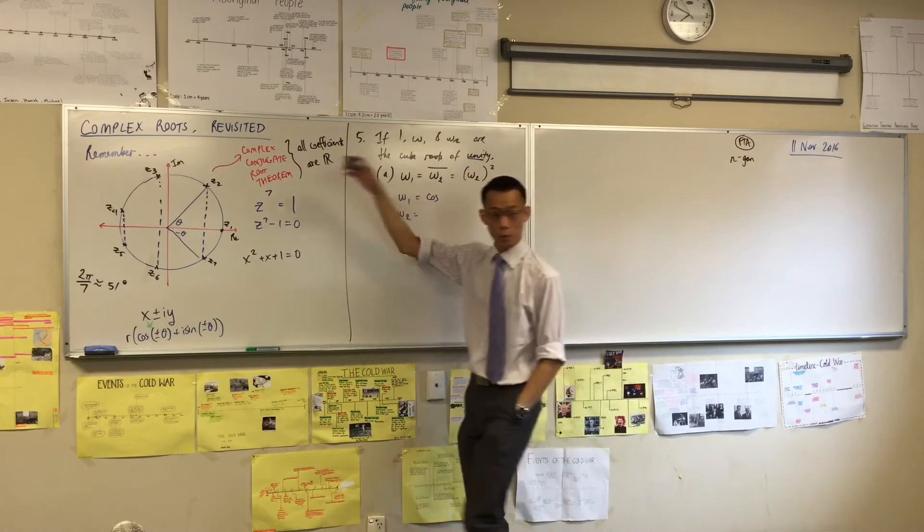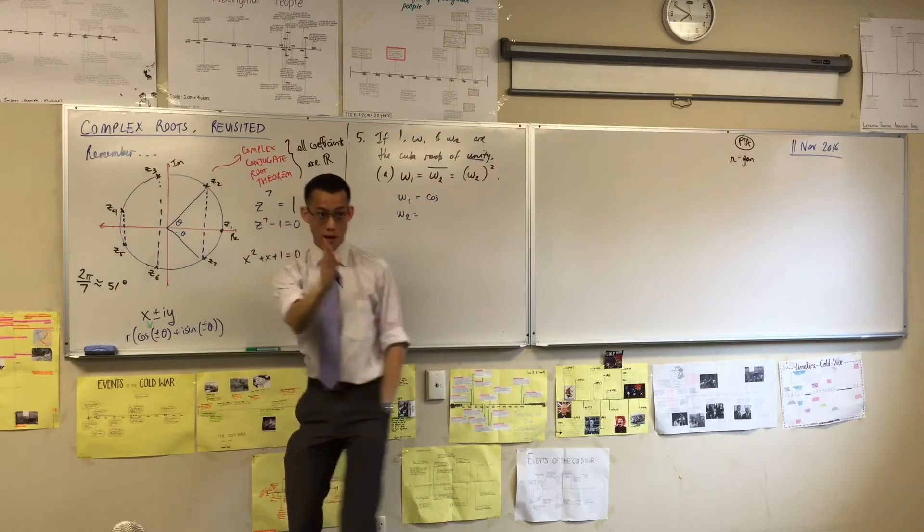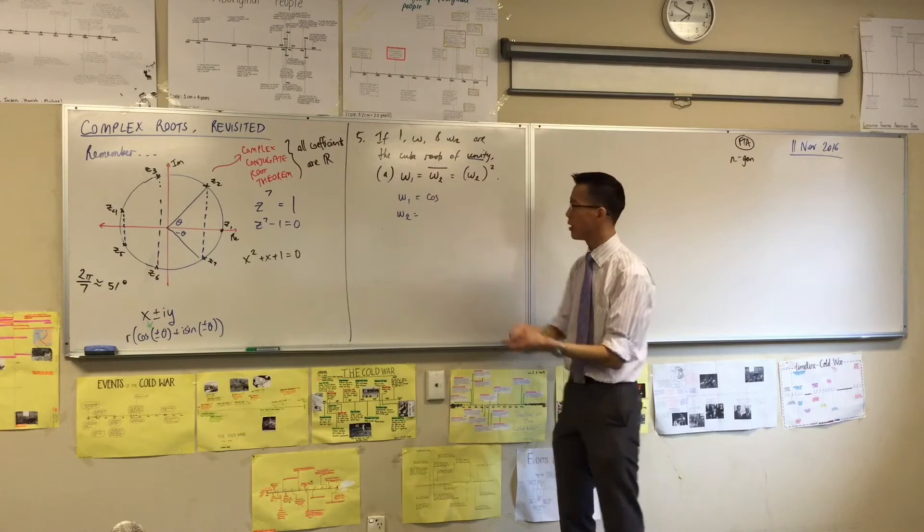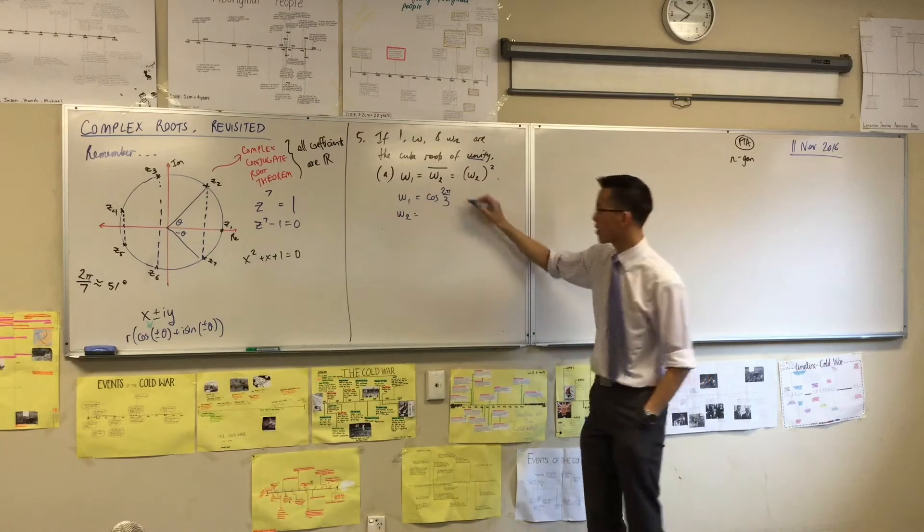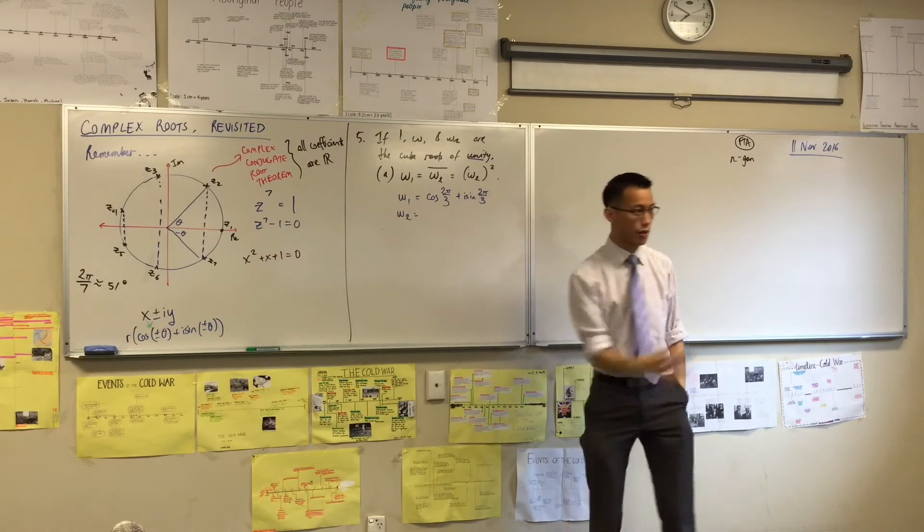W1, that's the first one going around. We said, how far do you have to go? 2π/3, because they're the cube roots, right? So 2π/3 is the argument in there, cos 2π/3 plus i sin 2π/3. You happy with that?